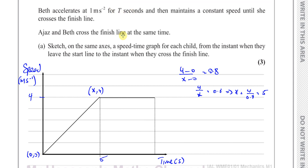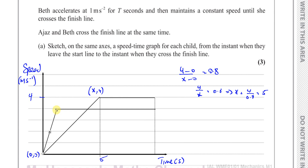Beth maintains a constant speed until she crosses the finish line. Because they cross the finish line at the same time and have both run 100 metres, the area of Beth's trapezium on the speed-time graph must equal the area of Ajaz's trapezium. This means Beth's speed line must go below Ajaz's line — if it went above, her area would be larger, implying a greater distance.